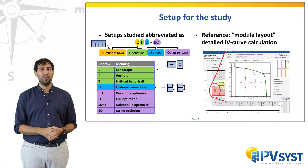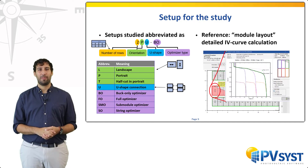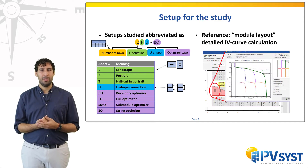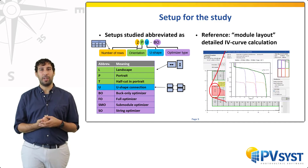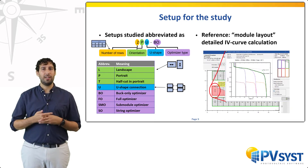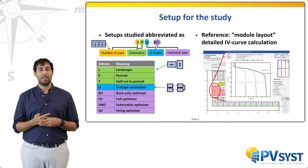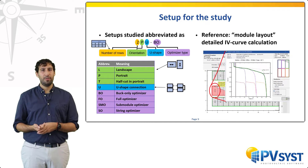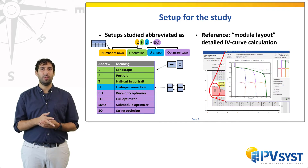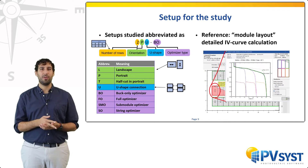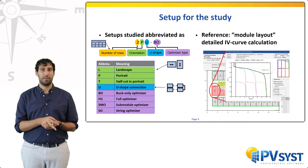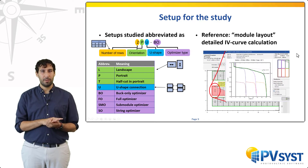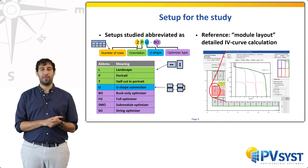We are interested in various parameters. First, the number of rows of modules on each table. Second, the orientation of the modules and the type of module cell layout — by this I mean half-cut cells or standard layout. Third, whether the string spreads over multiple rows, which is also called U-shaped connections. And fourth, different types of optimizers.